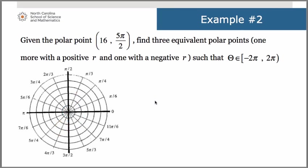Let's try another example: the point (16, 5π/2). Because of the large r value, I need to scale my concentric circles — each circle out represents 4, so that's 4, 8, 12, 16. Now 5π/2 is 2 and a half π, so starting on the right: 1π, 2π, then another half puts you up at π/2. At 16 units out along π/2, that's my original point.